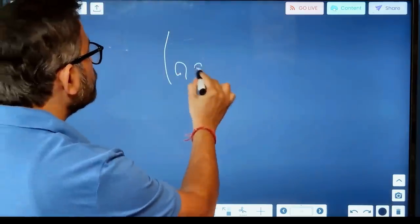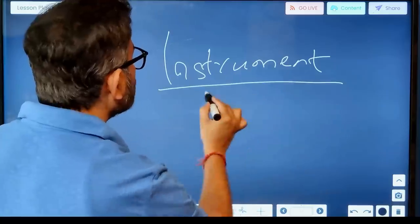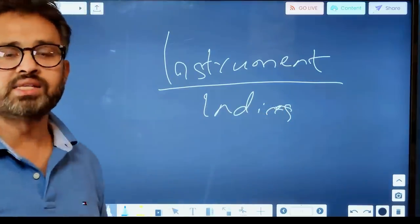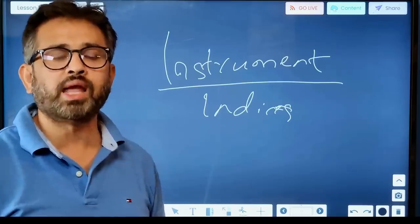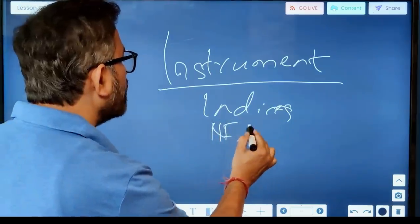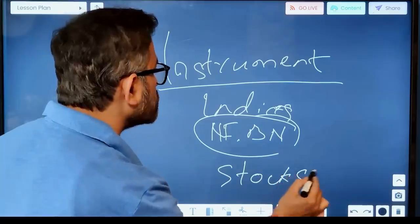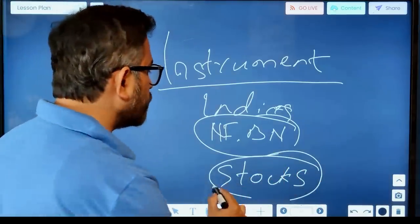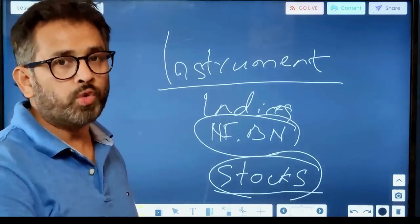Regarding the instrument: this setup works most of the time on indices such as Nifty, Bank Nifty, Fin Nifty, Sensex Nifty, and Midcap Nifty. Most of the time I have seen it works very well on Nifty and Bank Nifty. It can also happen on stocks — so after indices, the next instrument I suggest is stocks.